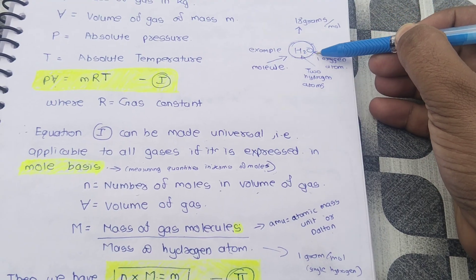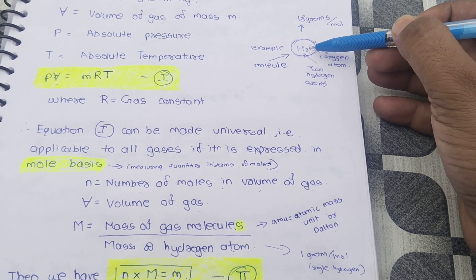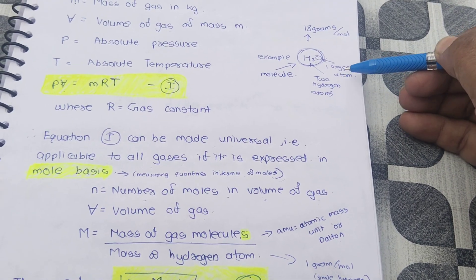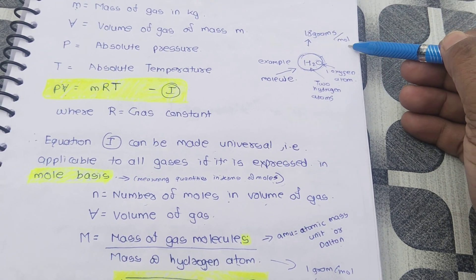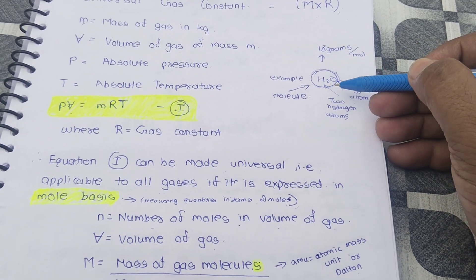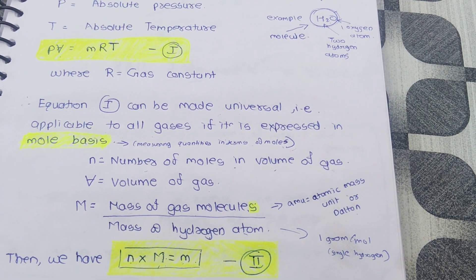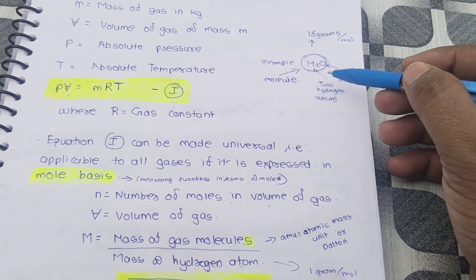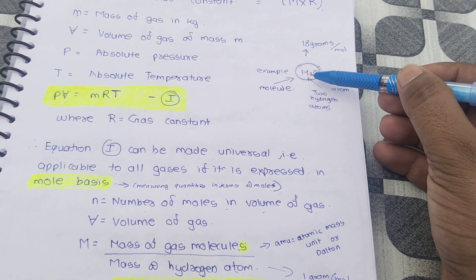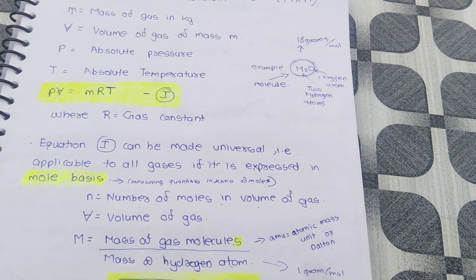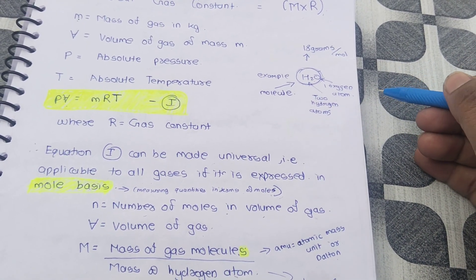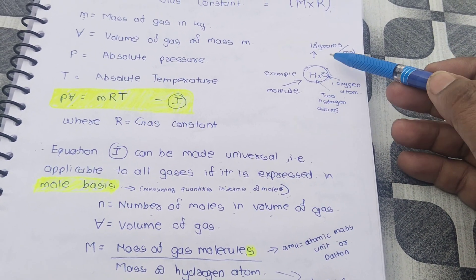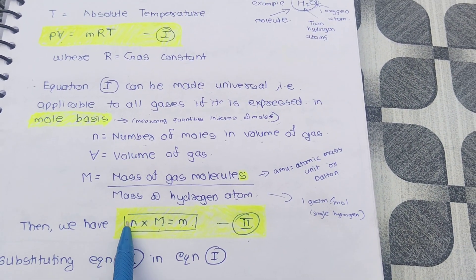H2O is a single molecule containing two hydrogen atoms and one oxygen atom. The total weight of H2O is 18 grams per mole — that is the molar mass. This is for explanation and understanding purposes. Molecules like H2O, CO2, N2O contain hydrogen atoms, carbon atoms, and nitrogen atoms, and these are all calculated in grams per mole.